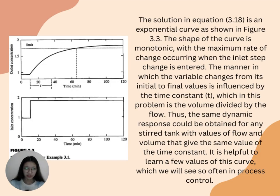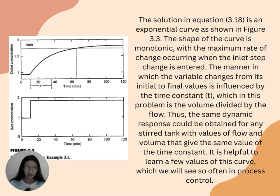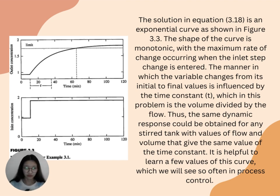Next would be Figure 3.3, which is the dynamic result for Example 3.1. The solution in Equation 3.18 is an exponential curve as shown in Figure 3.3. The shape of the curve is monotonic, with the maximum rate of change occurring when the inlet step change is entered. The manner in which the variable changes from its initial to final values is influenced by the time constant τ, which in this problem is the volume divided by the flow. Thus, the same dynamic response could be obtained for any stirred tank with values of flow and volume that give the same value of the time constant.